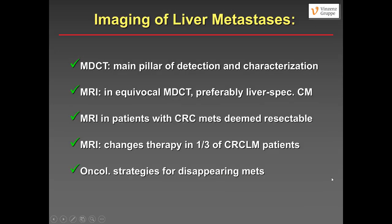In conclusion: MDCT still is and will remain the main pillar for detection and characterization of liver metastases. MRI is a great tool for equivocal CT findings, preferably with liver-specific contrast agents. MRI with liver-specific contrast is the method of choice for colorectal liver metastases deemed potentially resectable. MRI changes therapy and surgical strategy in roughly one-third of patients, and you need to develop together with surgeons an oncologic strategy to deal with potentially disappearing metastases. Thank you.